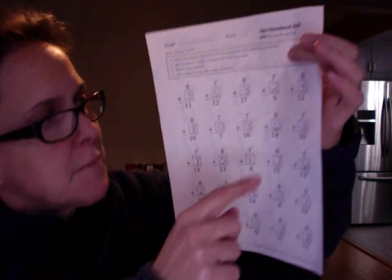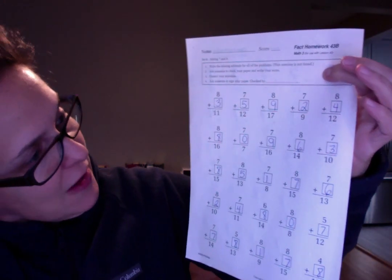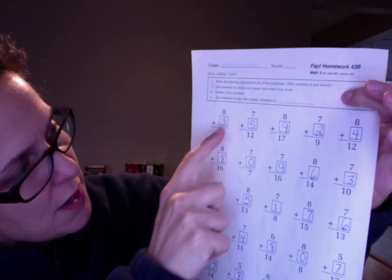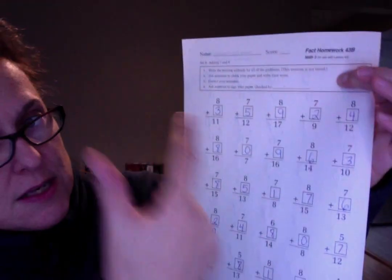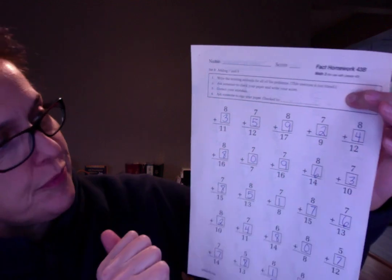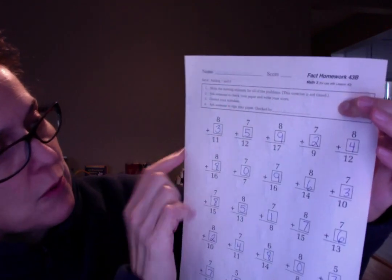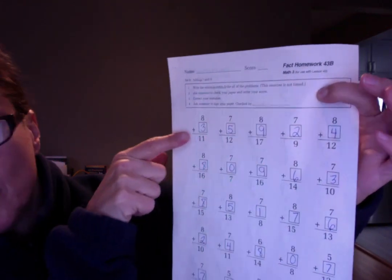I know these can be tricky, but you have to kind of think about fact families. Eight plus what is 11? Nine, ten, eleven, three. Or you can think of it backwards like 11 minus 8 equals three.